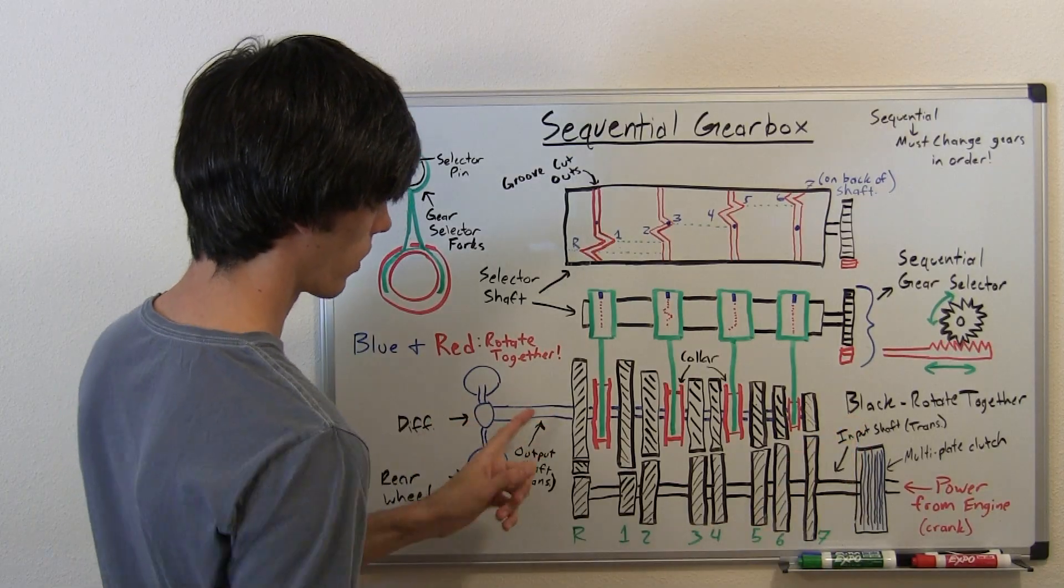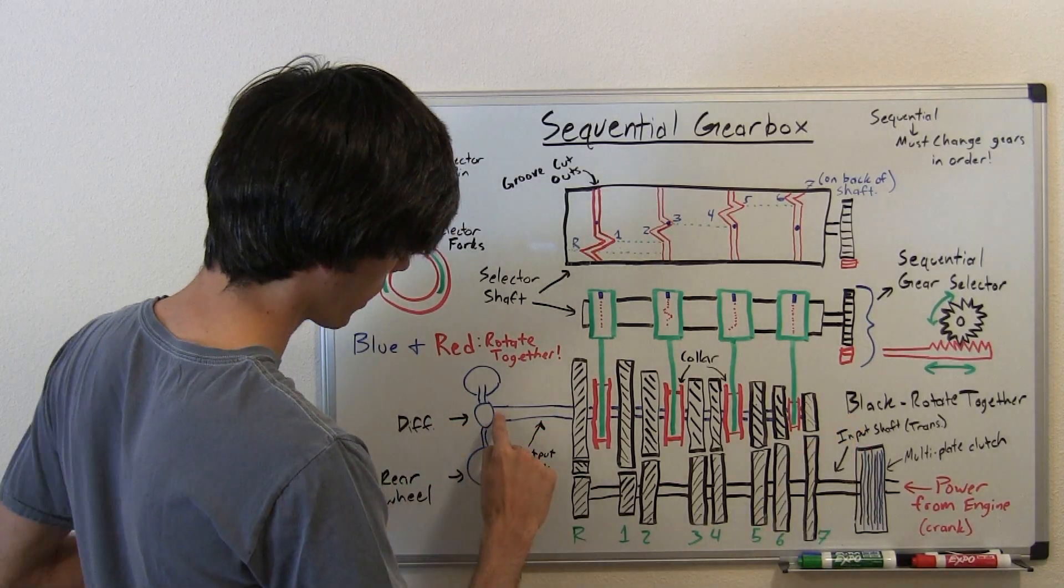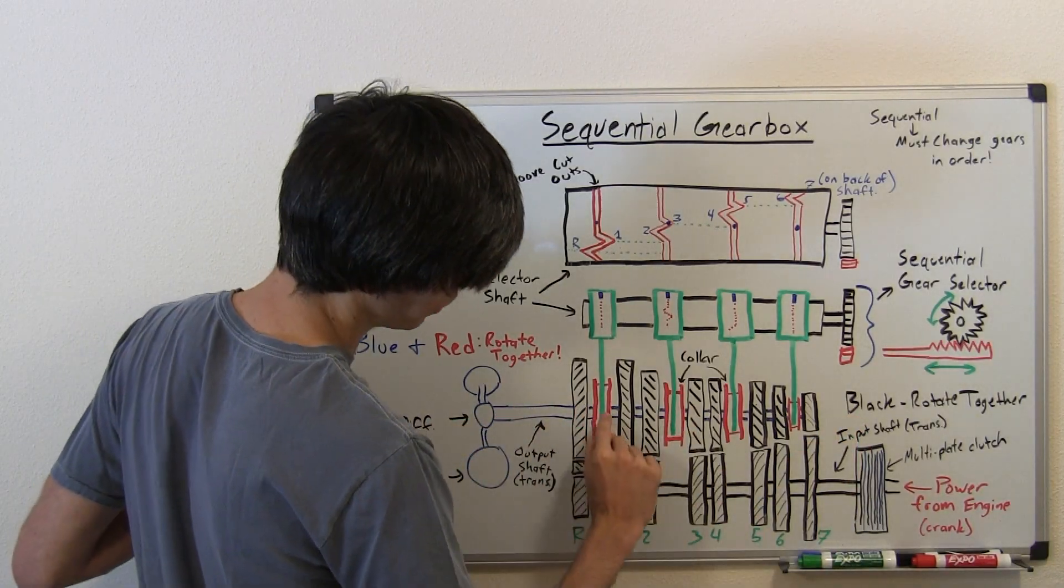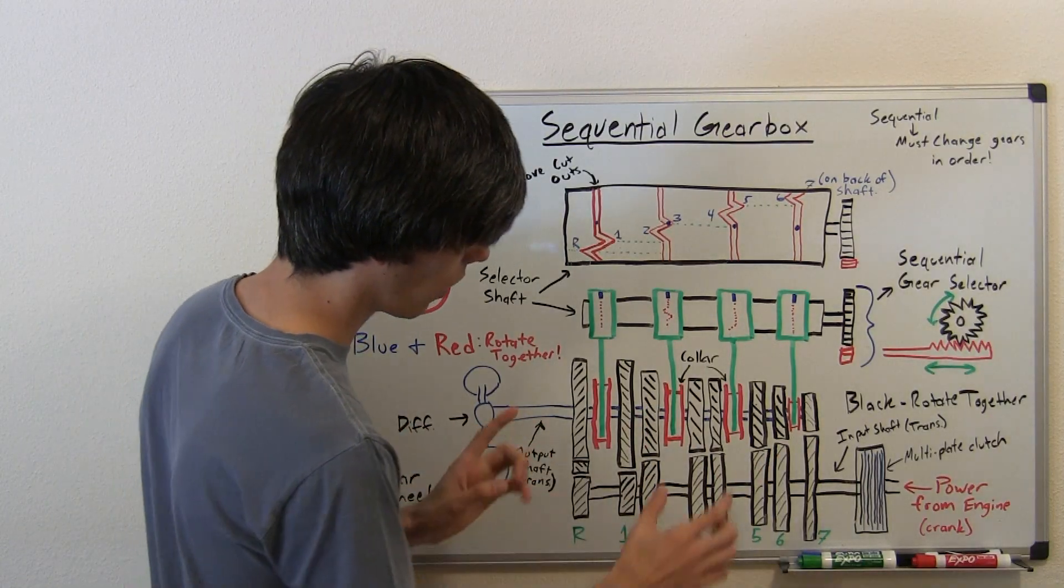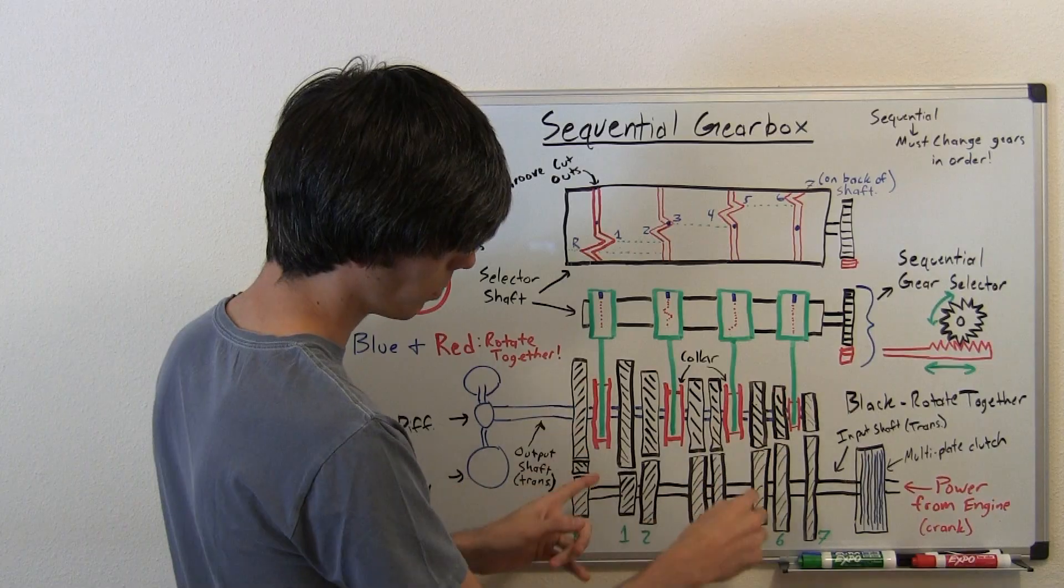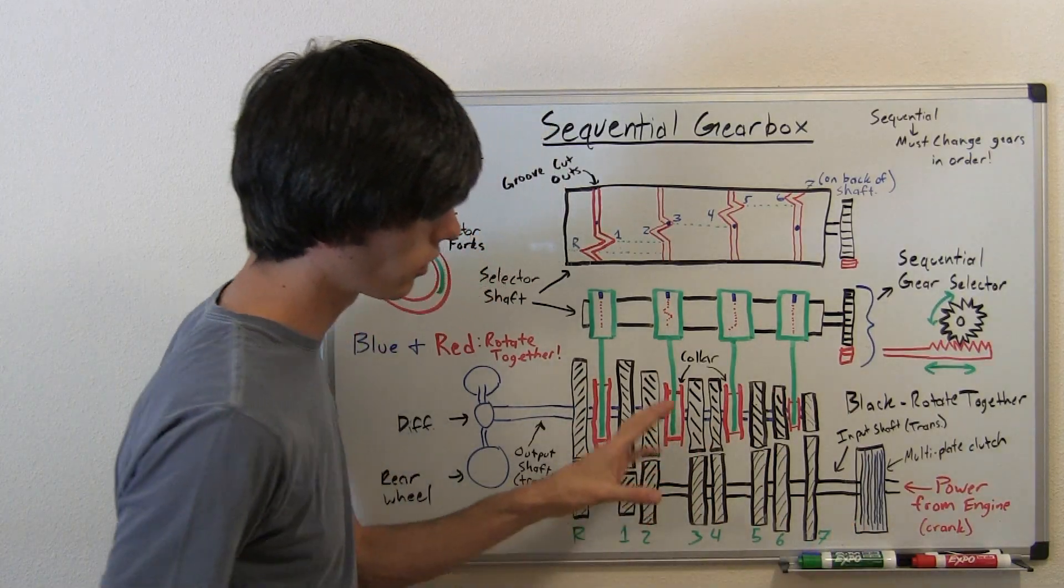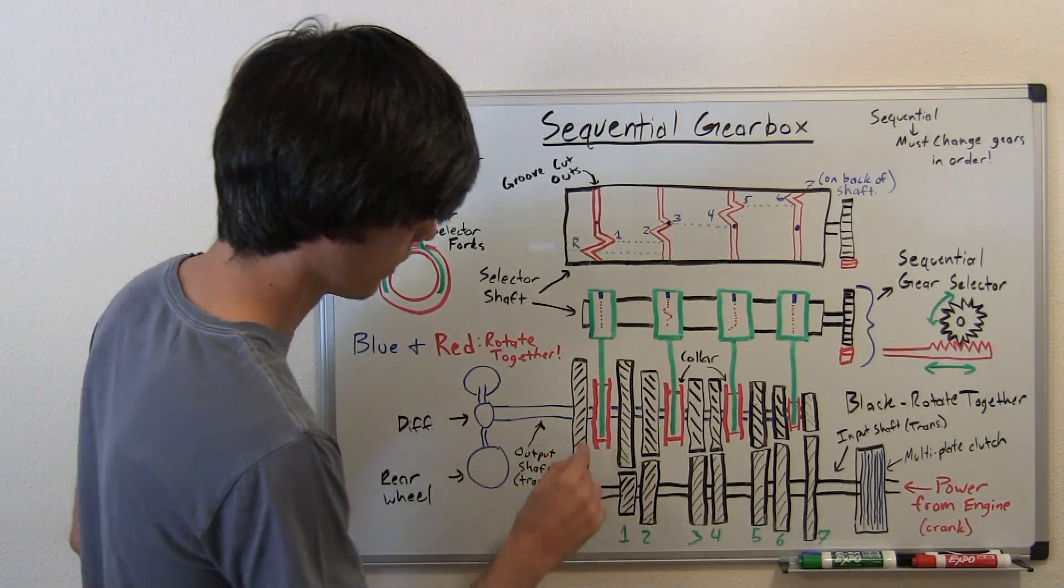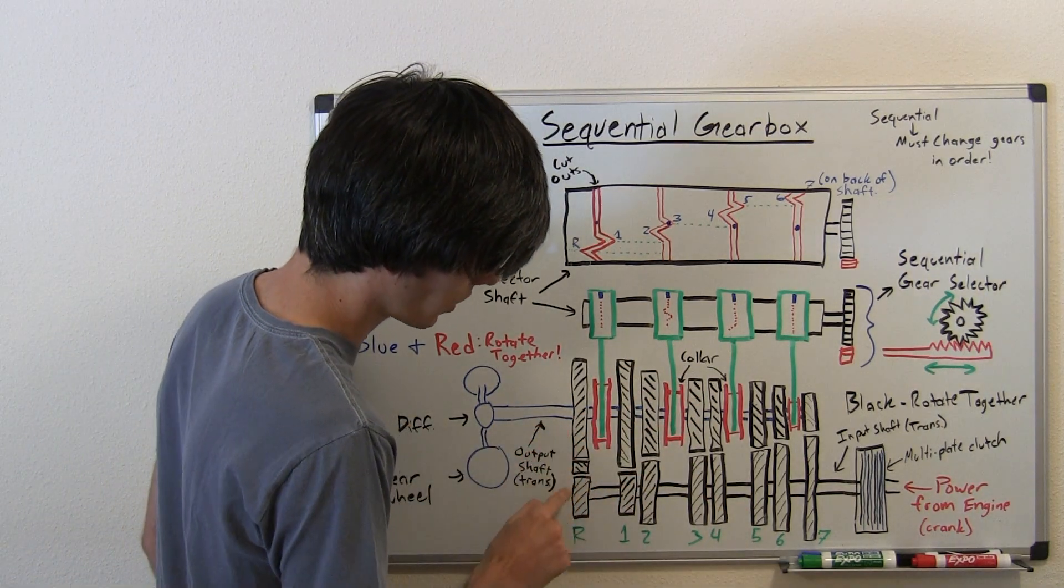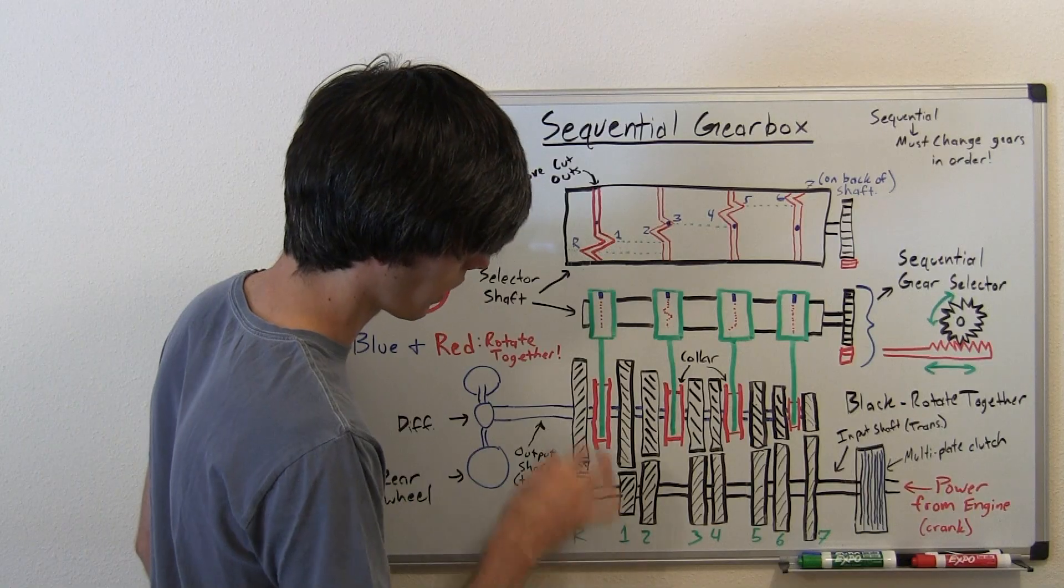And on the other side, we've got our output shaft. The output shaft is drawn in blue. Now what's important to note is all of the gears that are black, all of these black gears and this black shaft, these are all rotating together at all times. No matter what, these black gears are rotating with these gears here. They are meshed together constantly.